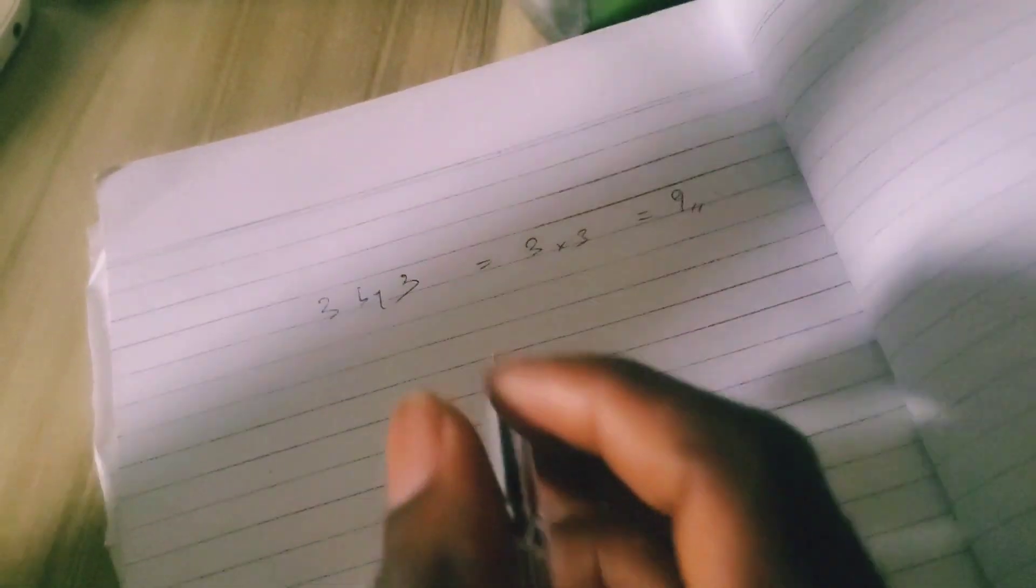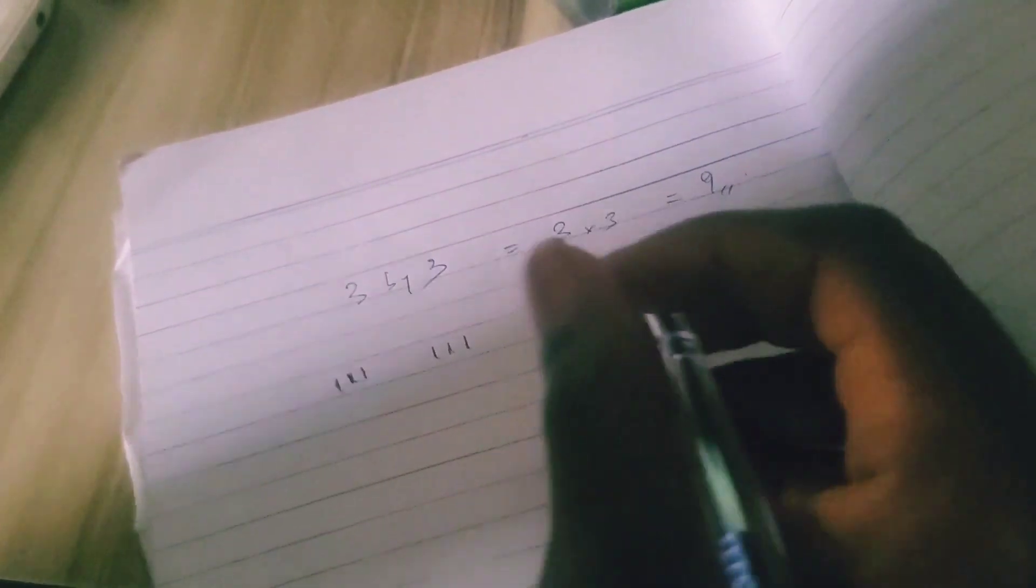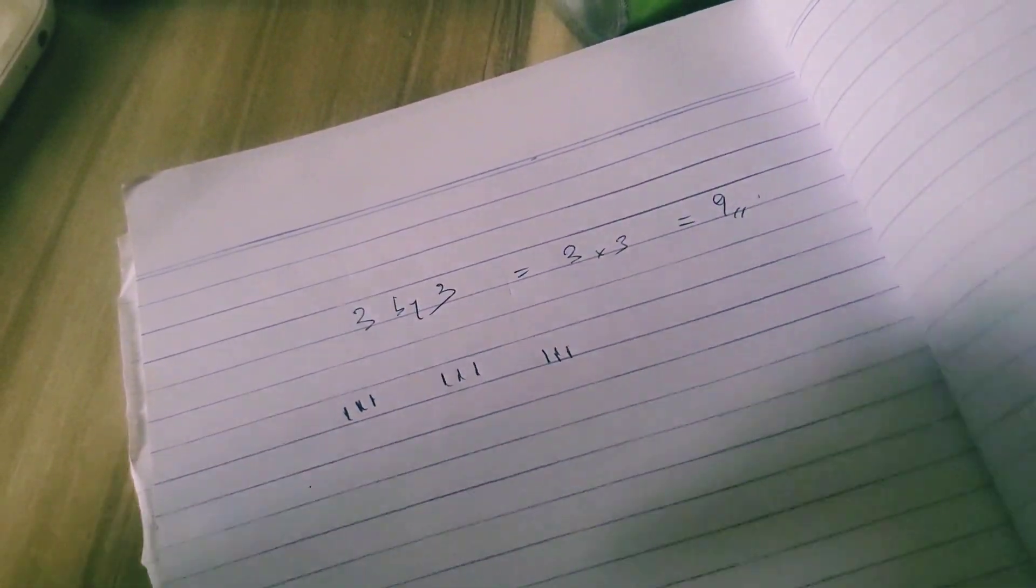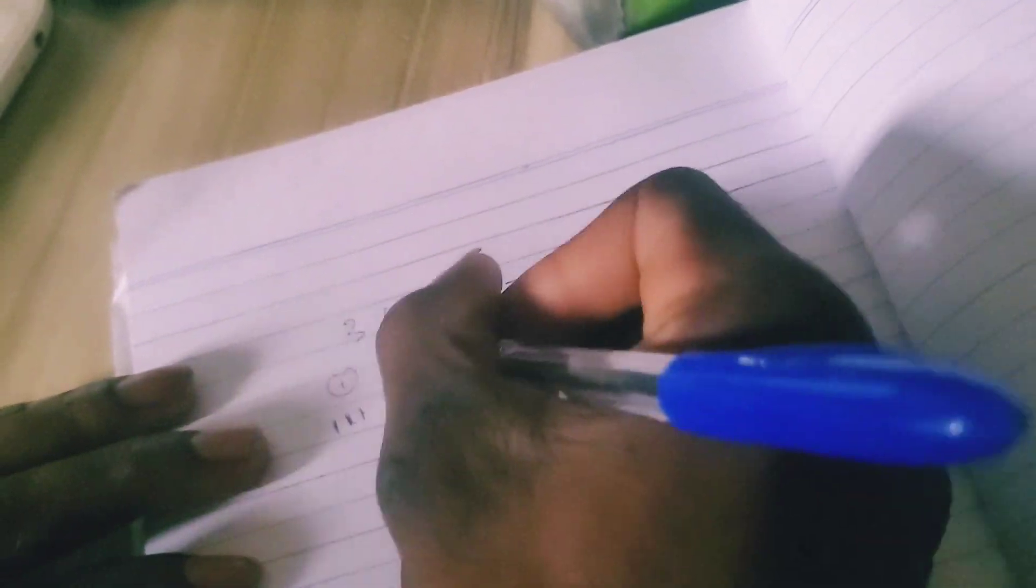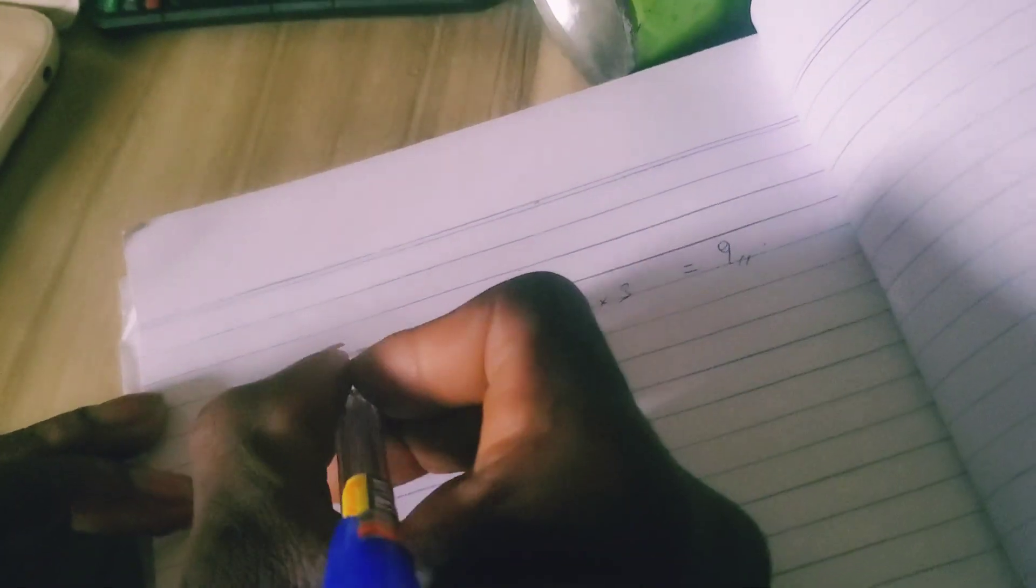So which means, for example guys, you have three sweets, your friend has another three sweets, and another friend has another three sweets. So which means all of you have three, three sweets, which means we have one friend, two friends, and a third friend. These are the three friends that this stands for.